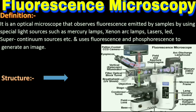After the sample, when illumination starts, emission starts from the specimen. This emitted light reaches back to the objective lens, passes through the objective lens, reaches the dichroic mirror, then after the dichroic mirror it reaches the emission filter, and after that it reaches the detector.